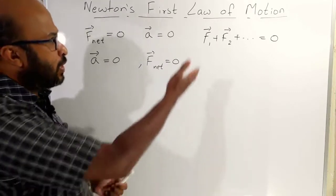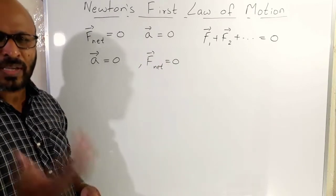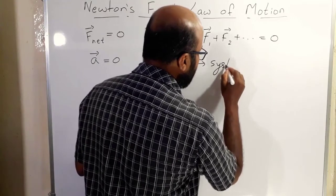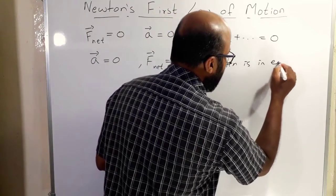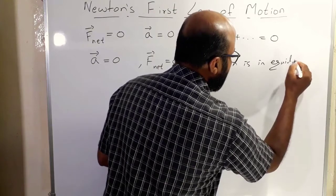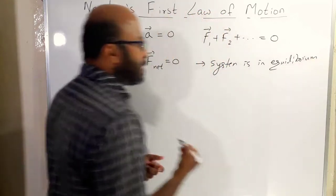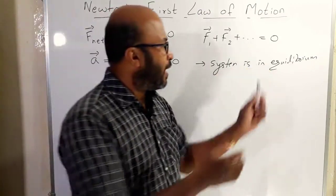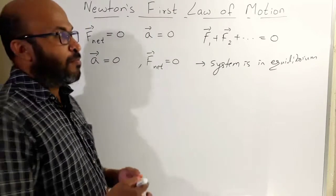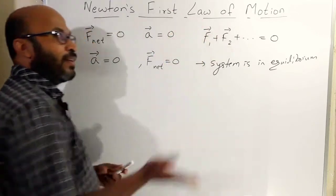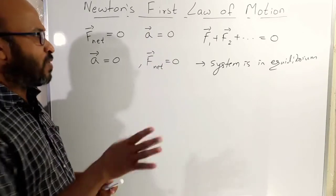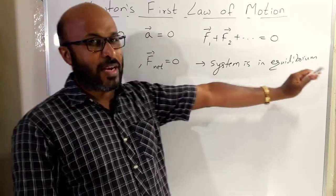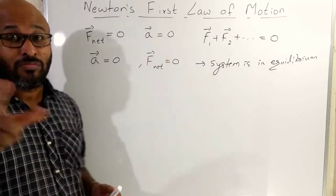If we say that the net force is zero, we say that the system is in equilibrium. If the system is in equilibrium, it means that the net force is zero and acceleration is zero.